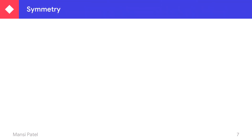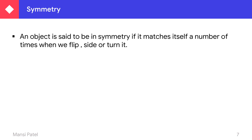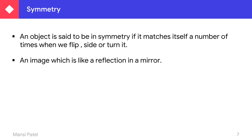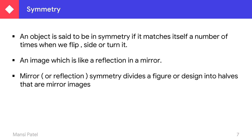Now let us revise symmetry. What is symmetry? An object is said to be in symmetry if it matches itself a number of times when we flip, slide, or turn it. When we flip, slide, or turn any object, if both sides are the same a number of times and we get the same part, then we can say that object is in symmetry. An image which is like a reflection in a mirror is also known as symmetry. Mirror or reflection symmetry divides a figure or any design into halves that are known as mirror images.